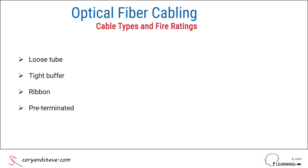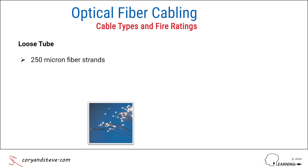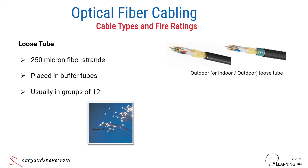The first type of cable construction is loose tube, where 250 micron fiber strands are placed in buffer tubes within the cable, usually in groups of 12. This construction is routinely selected for aerial or underground outdoor cables used to interconnect multiple buildings on a campus, with gel or tape used to prevent moisture infiltration. If necessary, additional physical protection can be provided by one or more layers of corrugated steel armor between layers of jacketing.